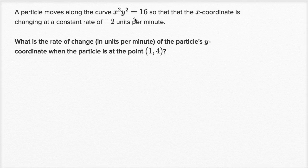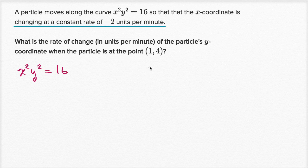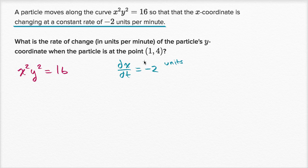So let's rewrite what they told us. The curve is described by x squared y squared is equal to 16. The x coordinate is changing at a constant rate of negative two units per minute. So we could say that dx/dt, the rate of change of the x coordinate with respect to time, is equal to negative two units per minute.